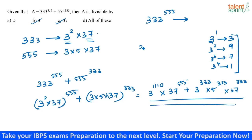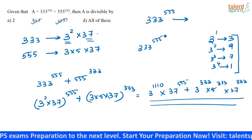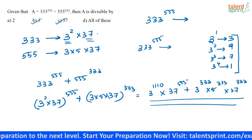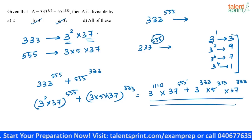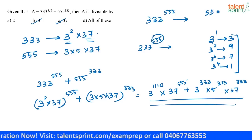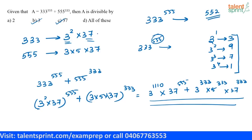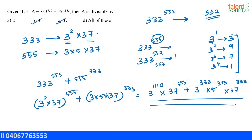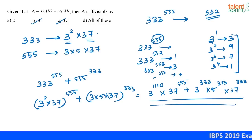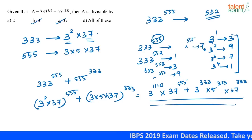What will be the last digit of 333 to the power 555? The closest multiple of 4 near 555 is 552. So 333 to the power 552 has last digit 1. Therefore 333 to the power 553 ends in 3, 333 to the power 554 ends in 9, and 333 to the power 555 ends in 7. So the last digit of 333^555 is 7.